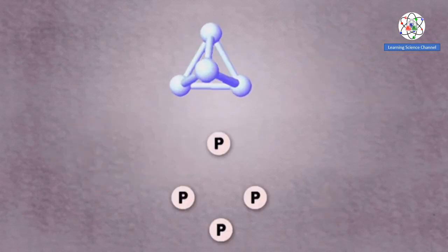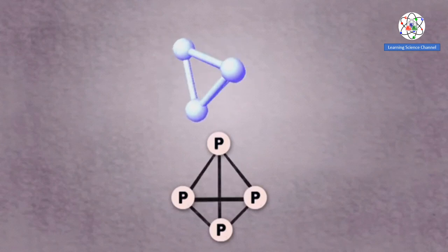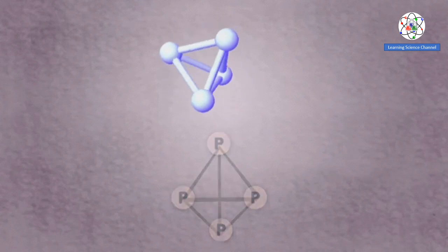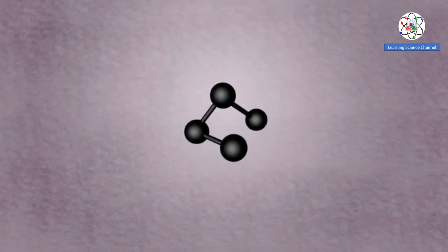White phosphorus consists of four phosphorus atoms held together in a tetrahedral arrangement. Some other allotropes of phosphorus also exist: black phosphorus and violet phosphorus.